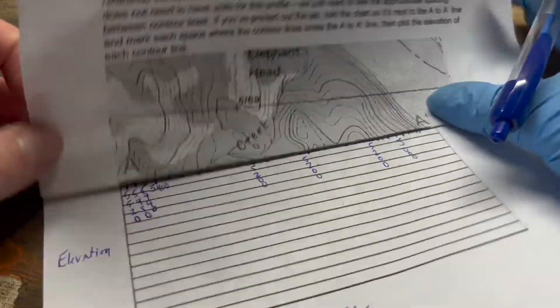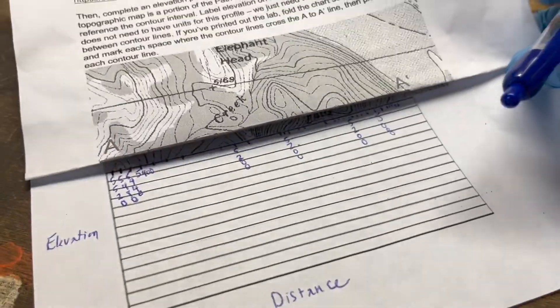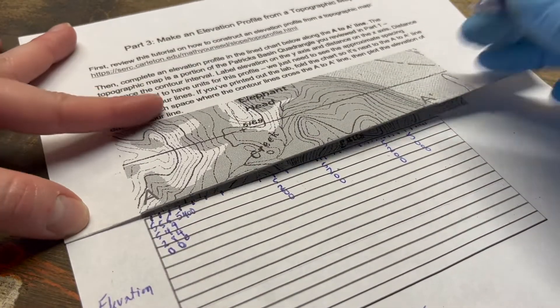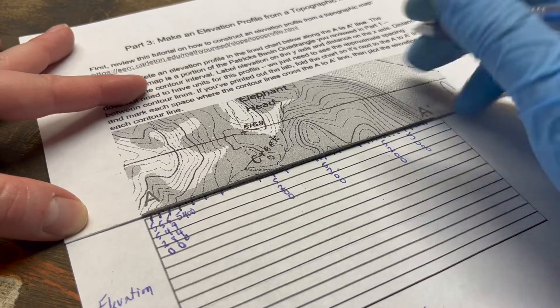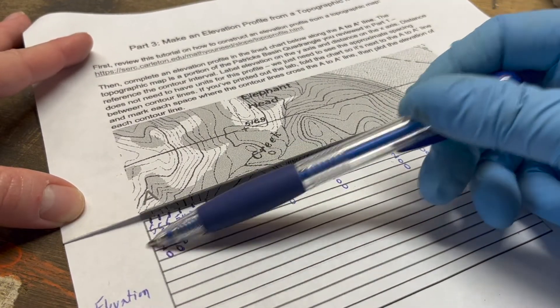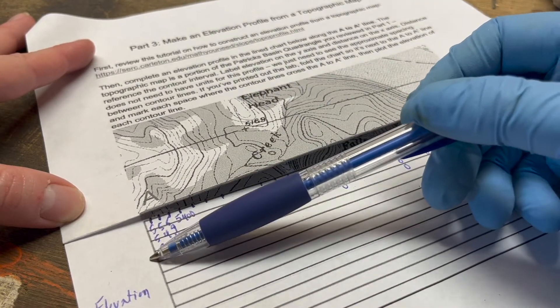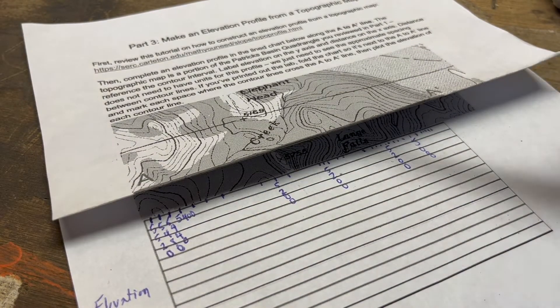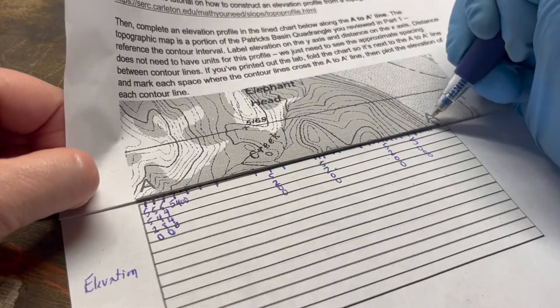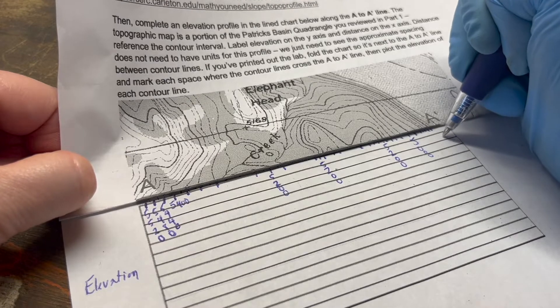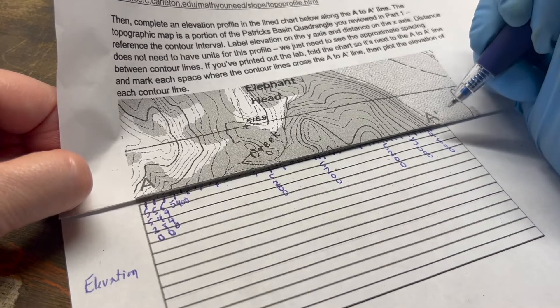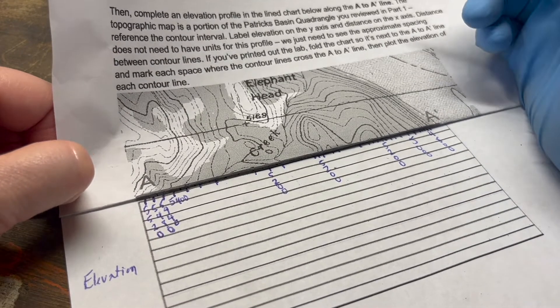I do recommend using pencil so you can erase, but you're going to have your elevation here plotted, and these are elevation values. I would say the max value on this axis will probably be about 5600, and then the minimum, if you want to make it look kind of nice, would be probably a little bit under 4800. That's what you can do.